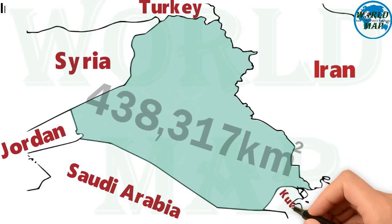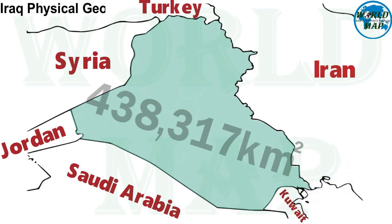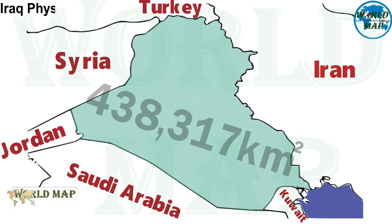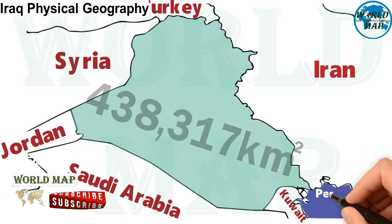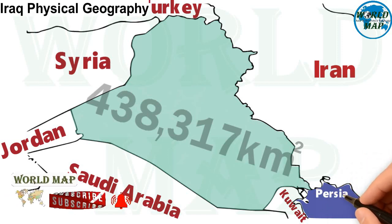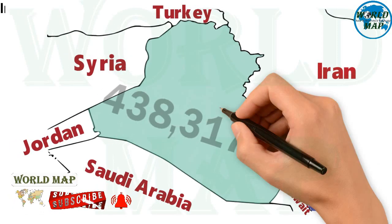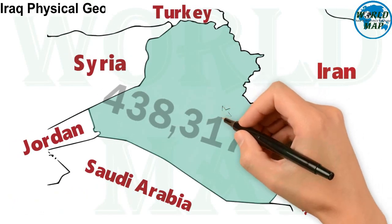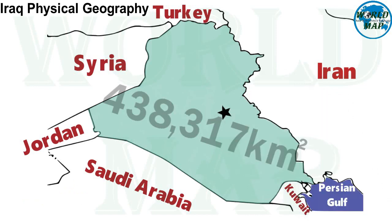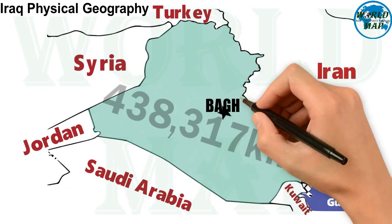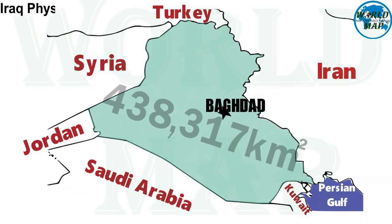The capital and largest city is Baghdad. Baghdad is the second largest city in the Arab world after Cairo. It is located on the Tigris near the ruins of the ancient Akkadian city of Babylon and the Sassanid Persian capital of Ctesiphon.